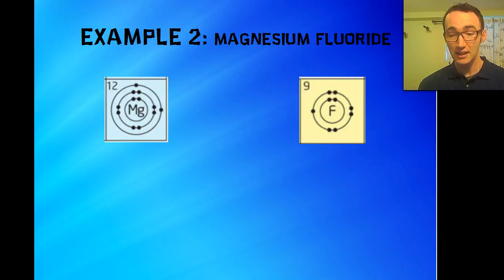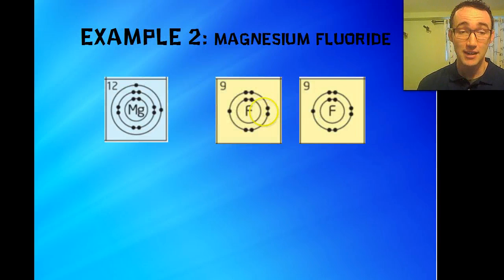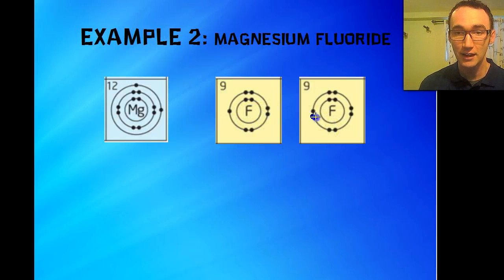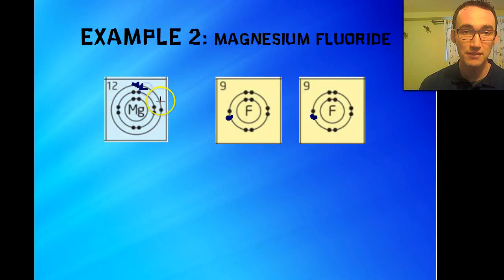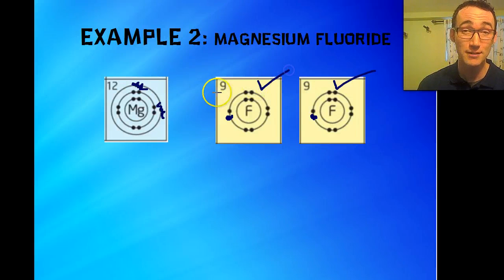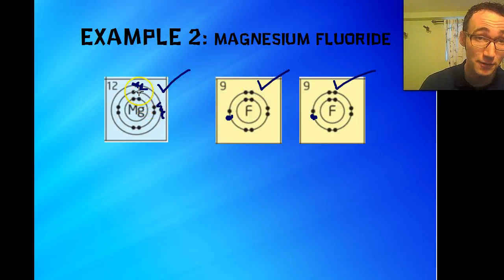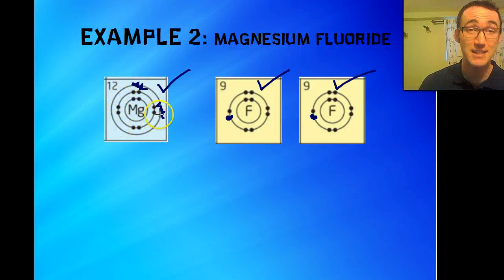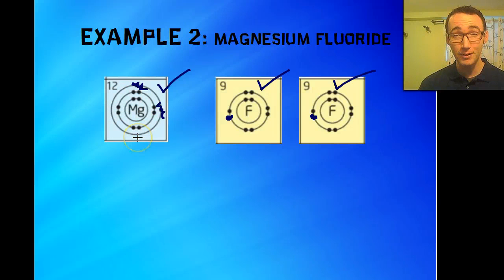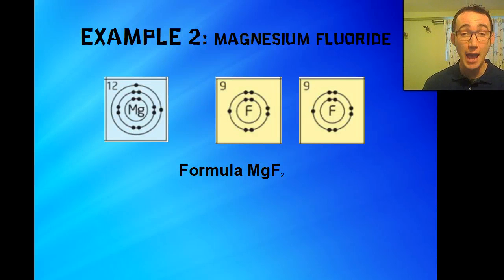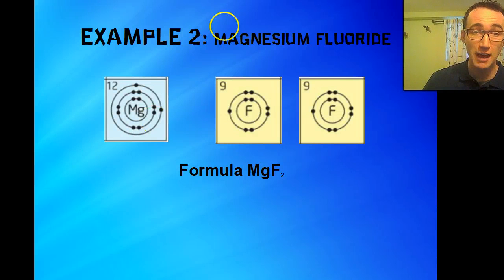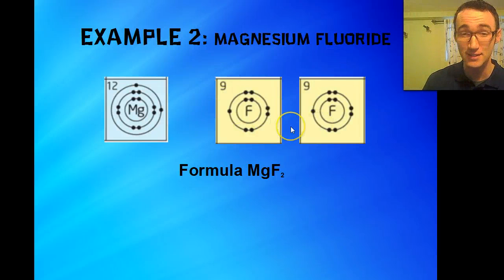We're still going to need something else — another fluorine to come in there. So now if another fluorine comes in, this one is happy, and this one's happy. Magnesium doesn't have any of the outer electrons, so it's happy too. Both fluorines have a full set of electrons — their outer shell now has eight electrons. So the formula would be MgF2, because you have one magnesium and two fluorines.